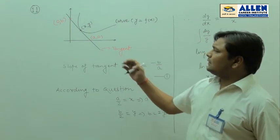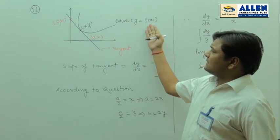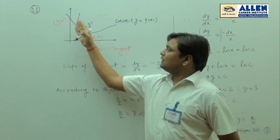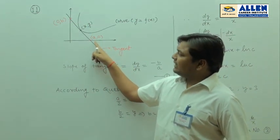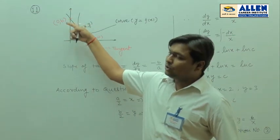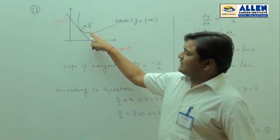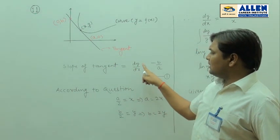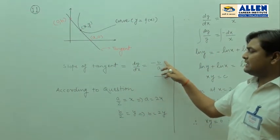In this question, one curve y = f(x) is given and its one tangent is there. This tangent makes an intercept a on the x-axis and b on the y-axis. It is given that the slope of the tangent is dy/dx, which is equal to minus b upon a.